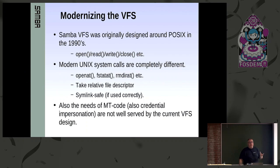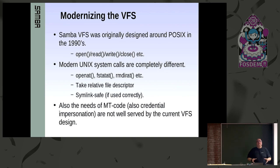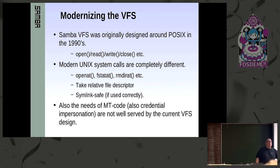The VFS was originally designed around POSIX from the 1990s: open, close, read, write — very simple. Modern Unix system calls are openat, fstatat, rmdirat — they all work relative to a file descriptor and they're symlink safe if used correctly. We have a boatload of code in Samba making things symlink safe that can go away when we move all our VFS interfaces to the 'at' versions.